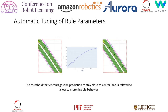Here the result for automatic rule parameter tuning is provided for the rule 'always stay close to the center lane.' The scene on the left shows an overcorrection scenario, where the corrected trajectory shown in red conforms with the rule but deviates further from the ground truth trajectory shown in black. This happens in cases where the agent is not driving according to the rules. As shown by the middle plot, the rule parameter, which is the distance threshold, is relaxed as training progresses to allow for more flexible behavior. This results in a better correction shown in the scene on the right.